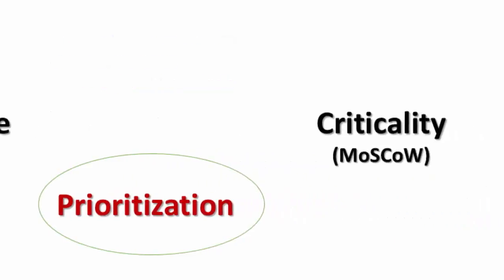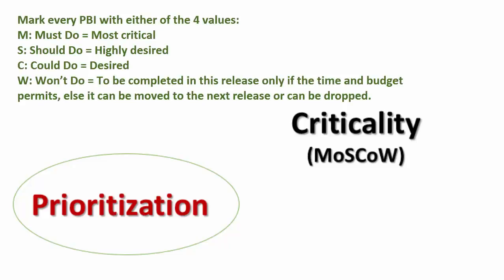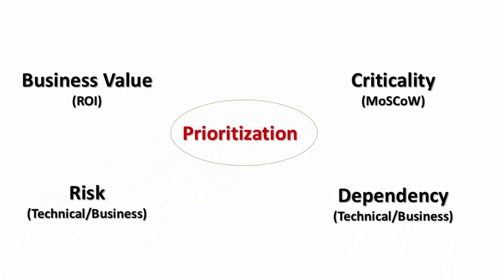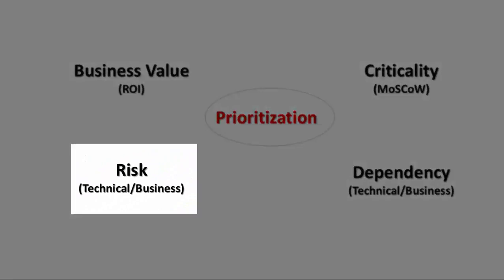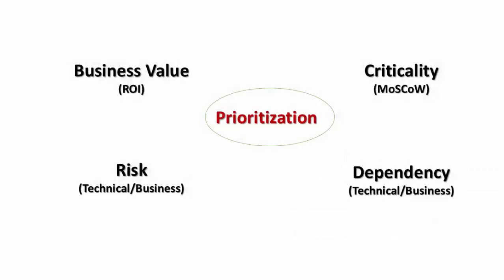Next, you also need to tell us their criticalities. Mark every PBI with one of four values: Must do (most critical), Should do (highly desired), Could do (desired), or Won't do. Won't do means these items are completed in the release only if time and budget permits; otherwise they can be moved to the next release or dropped. This technique is called the MoSCoW technique. We then add two more parameters: risk from a development perspective and technical dependencies. Taking all these factors into consideration, we prioritize.